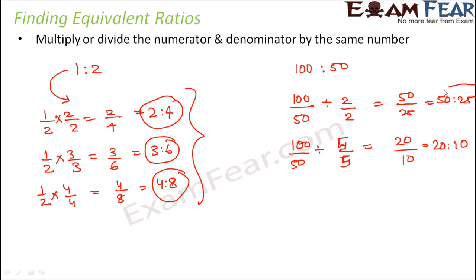So in this fashion, again here also 50 is to 25, 20 is to 10, 100 is to 50, these are all equivalent ratios. So in this fashion, by multiplying the numerator and denominator by the same number, we can find equivalent ratios of a given ratio.